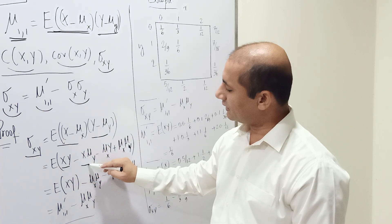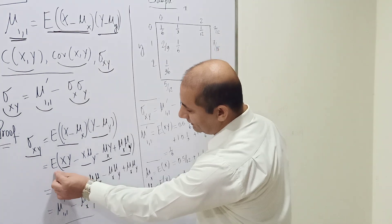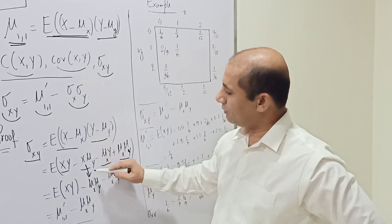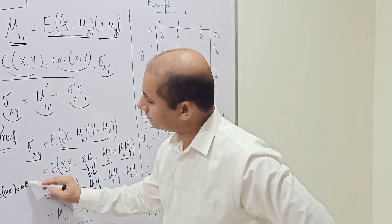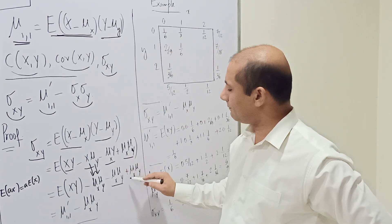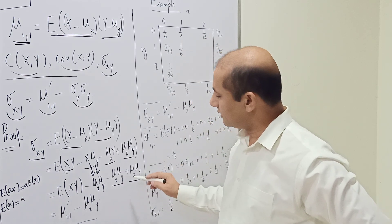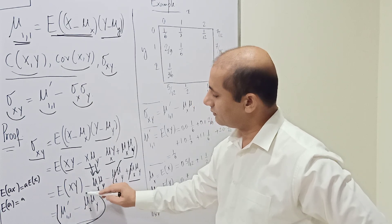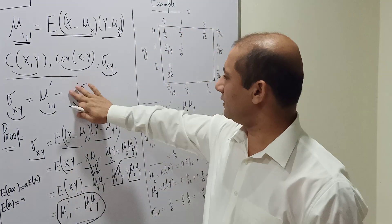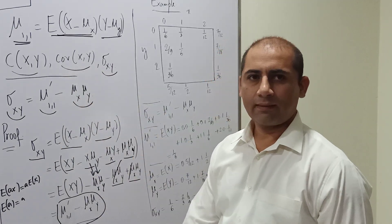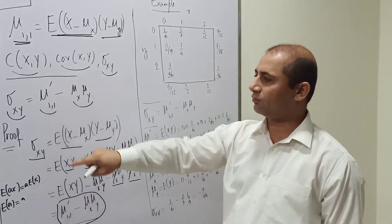Expanding (x − mu_x)(y − mu_y) gives xy − x*mu_y − mu_x*y + mu_x*mu_y. Applying expectation: E[xy] is mu_{1,1}'; E[x] = mu_x and E[y] = mu_y; since mu_x and mu_y are constants, the middle two terms each simplify to mu_x*mu_y, and the constant term stays. The two middle terms cancel, leaving sigma_{xy} = mu_{1,1}' − mu_x * mu_y.